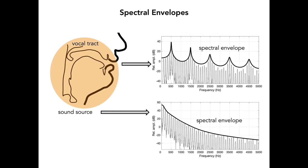A spectral envelope is a curve that encompasses the amplitudes of the harmonics in a spectrum. A spectral envelope has been constructed for both the source spectrum and output spectrum. The source spectral envelope indicates the decrease in harmonic amplitudes as frequency increases, whereas the envelope of the output spectrum clearly shows distinct regions or peaks where the harmonic energy has been enhanced relative to other regions.